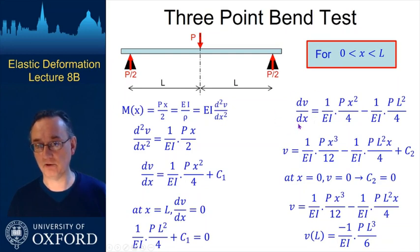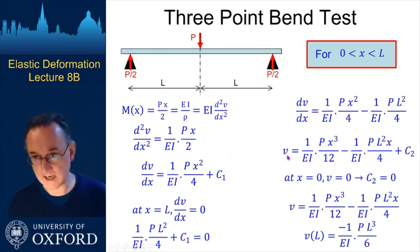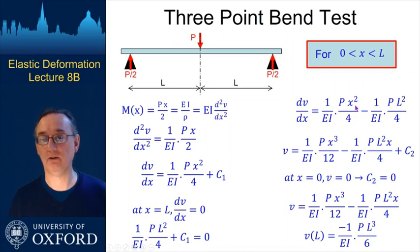And if I want the displacement itself, v, I integrate again. So the x squared goes to an x cubed. I'm going to divide by 3, so 3 times that 4 gives me the 12. And then this term here is constant, so that will integrate to go to a term in x plus some constant of integration at the end here.